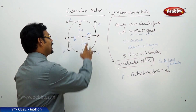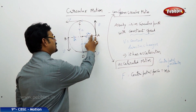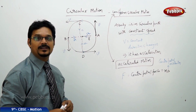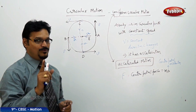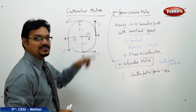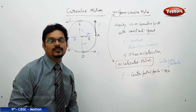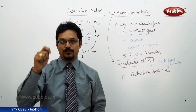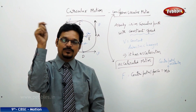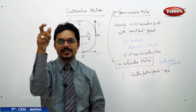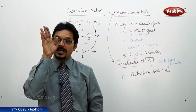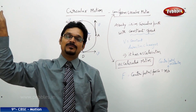Suppose the centripetal force stops working at point A. The question is: where does the body go? Does the body stay in the circular path? No. The body will move in a tangential path, because the velocity is along the tangent. That is why when you are whirling a rope tied to a stone and you suddenly release the rope, the stone does not move in a circular path — from the point where you let go, it goes in a straight tangential path.